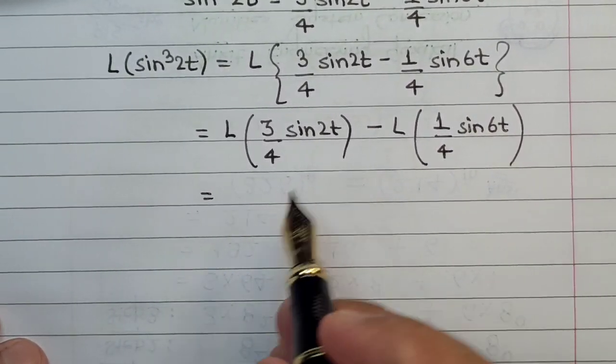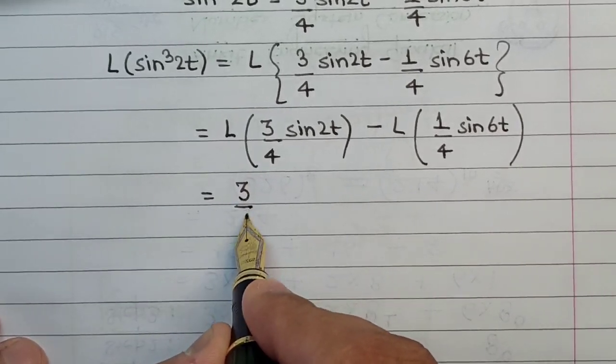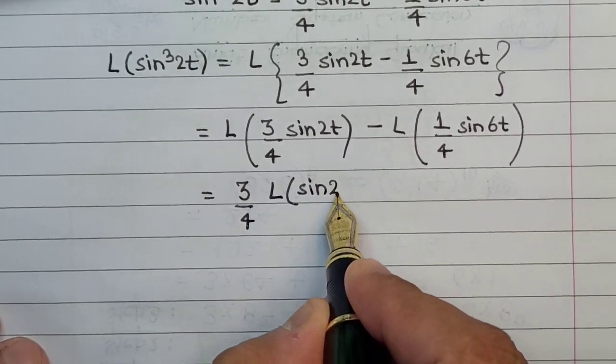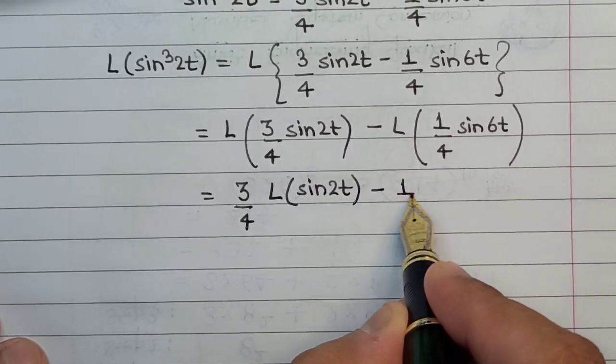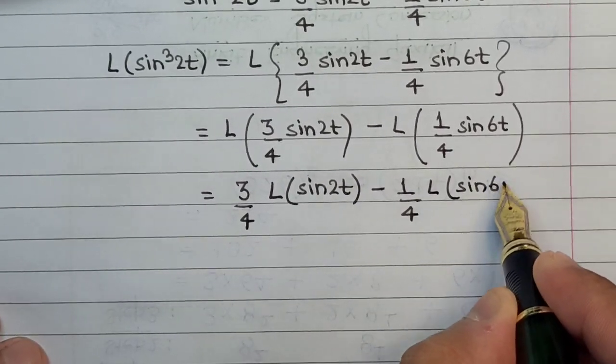As per the rules, the constants do not interfere with the Laplace transform. We can take the 3 by 4 part common outside. This will be 3 upon 4 times the Laplace transform for sine 2t minus 1 upon 4 Laplace transform for sine of 6t.